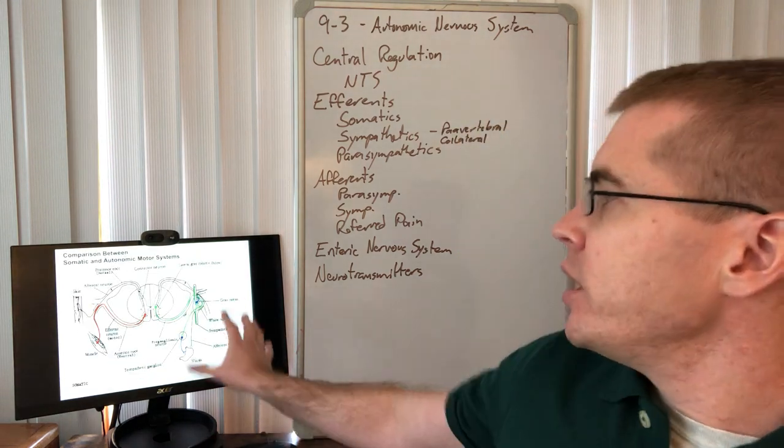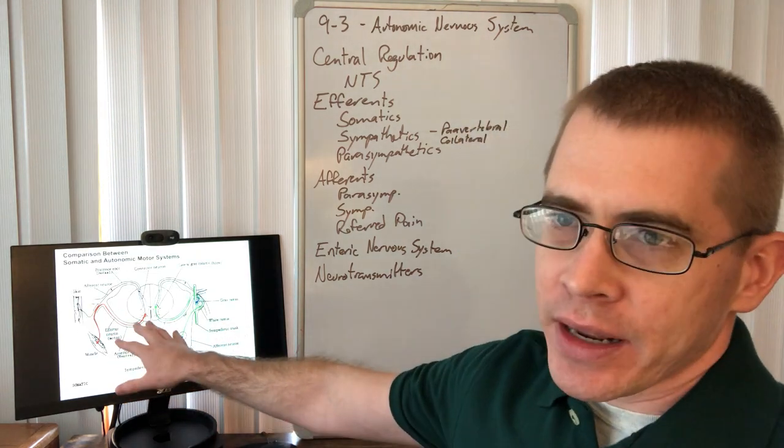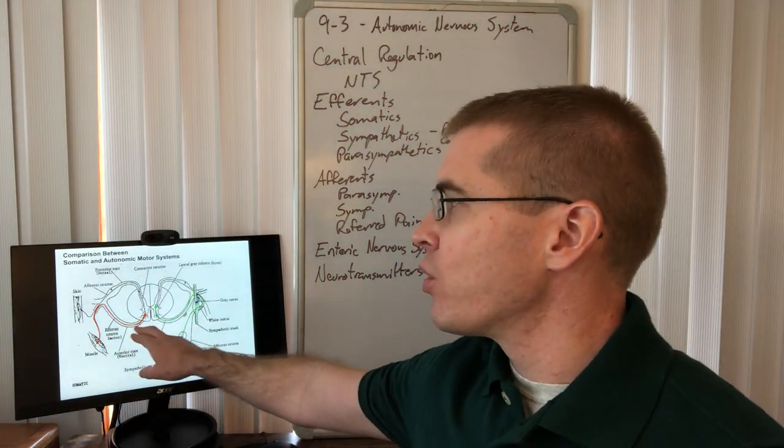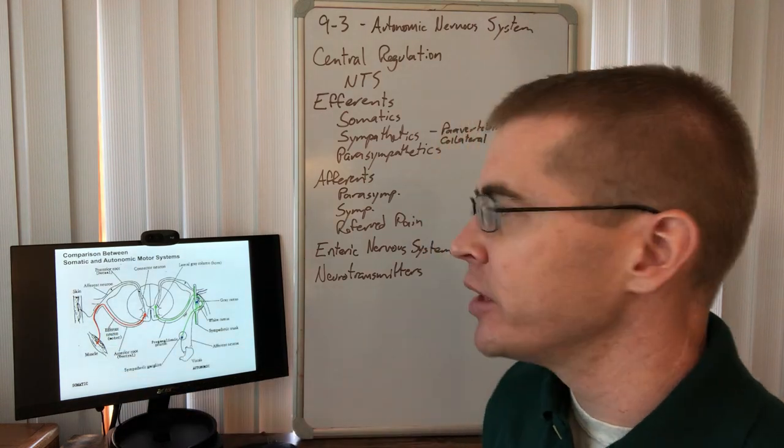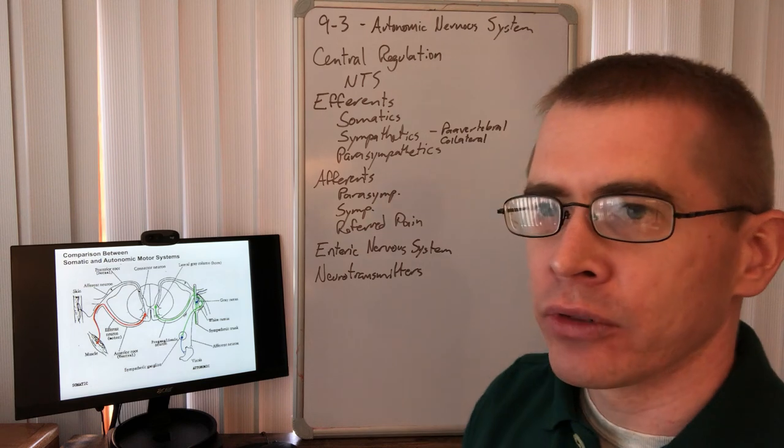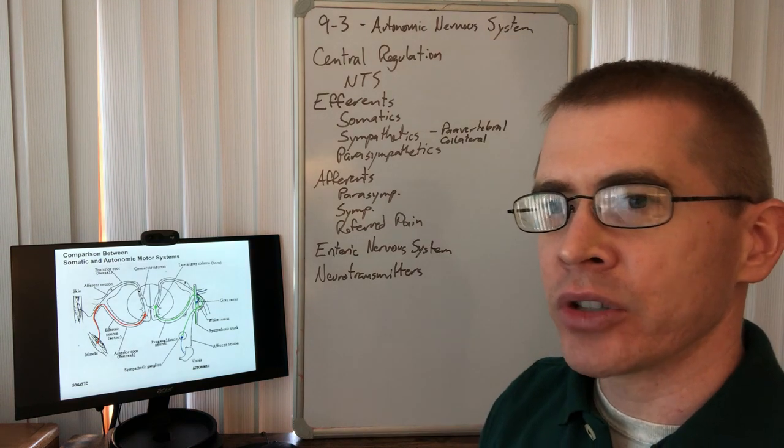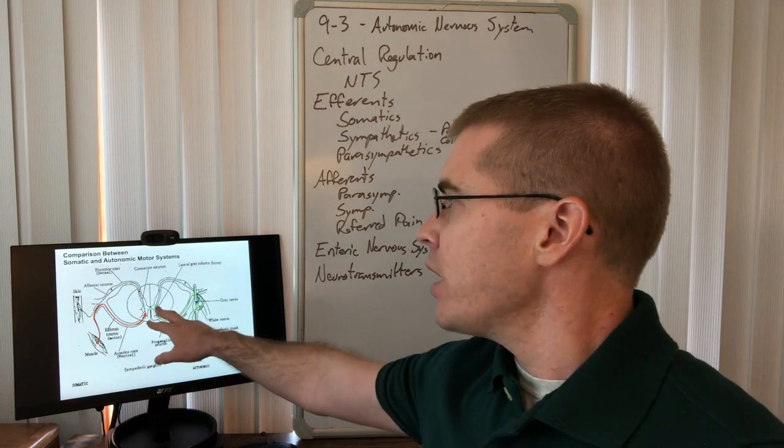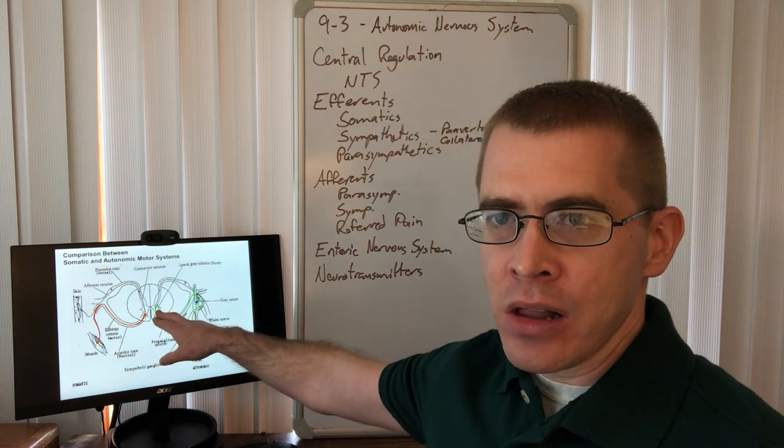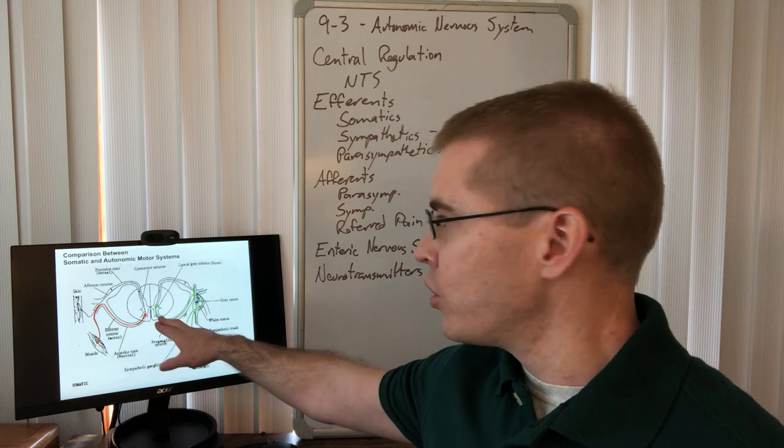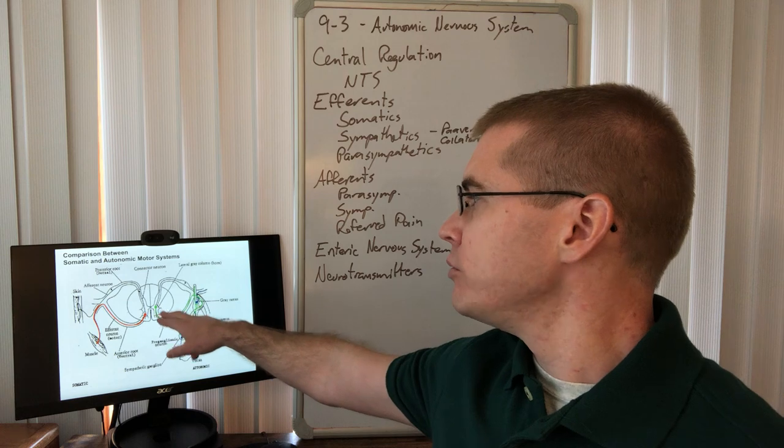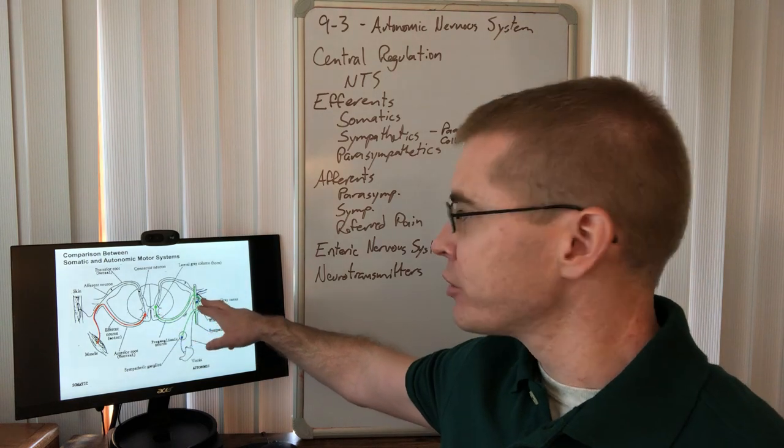So we understand about the somatic efferents. The somatic efferents from the anterior horn exit out through the anterior rootlets to form the spinal nerves, which then take a peripheral fiber to innervate whatever skeletal muscle is involved. The autonomic efferents travel out of the IML within the thoracic spinal cord, travel through the anterior rootlets. So they're traveling there.